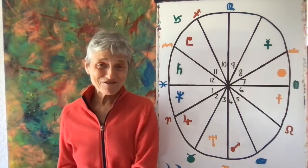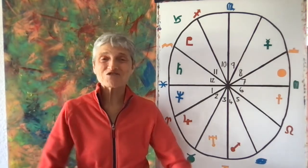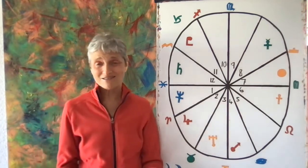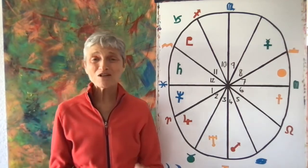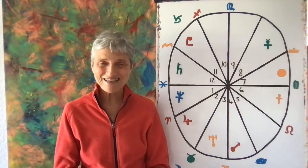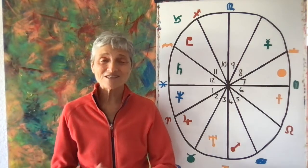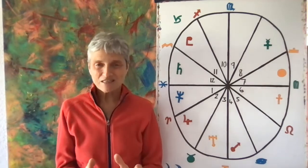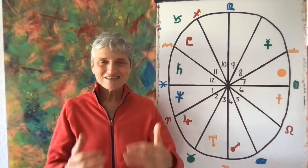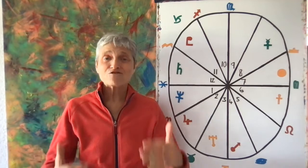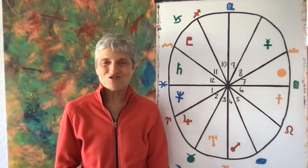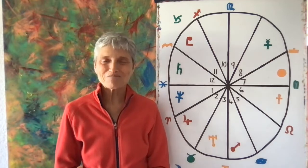Next month, the eclipses begin, Mars goes retrograde, there's a lot happening next month. This month, in many ways, because Mercury will go retrograde from the 10th of September until October 3rd, this is a little bit of respite. This is a slower moving month. If you want to go more slowly, it's easier to accomplish with the energies of this month.